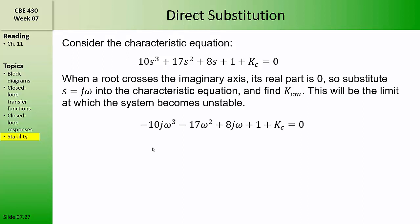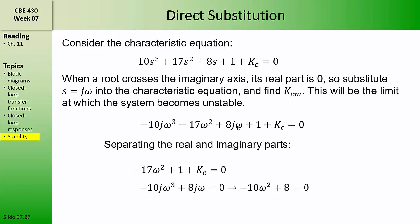To show how this works, in this characteristic equation we'll substitute S equals J omega. When we cube J omega, we end up with minus J omega cubed. And when we square J omega, we end up with minus omega squared. The S in the third term just becomes J omega. This equation now has both real and imaginary parts.